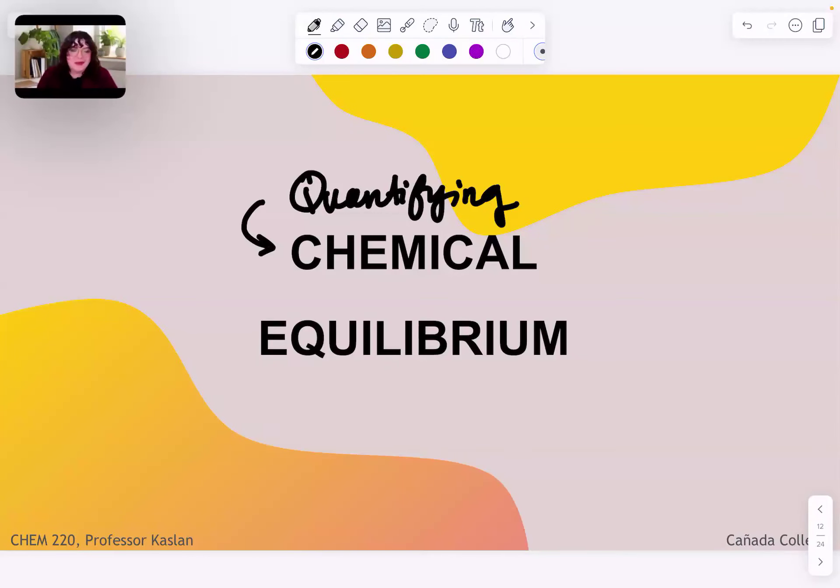All right. Hello, everybody. Welcome to our continued conversation about chemical equilibrium. When we last saw each other, we discussed the idea of the equilibrium constant, which is our primary means of describing a system at equilibrium numerically. So we looked at Kc,